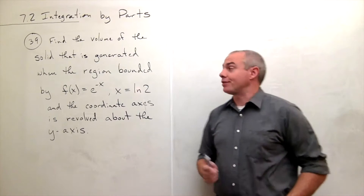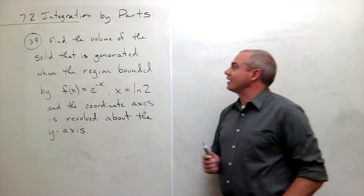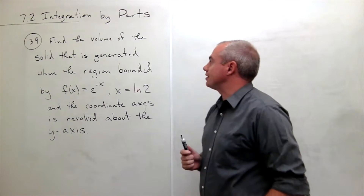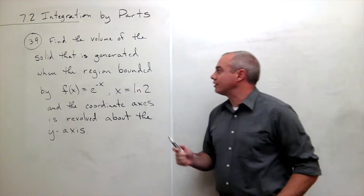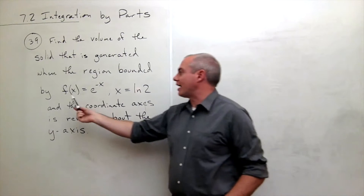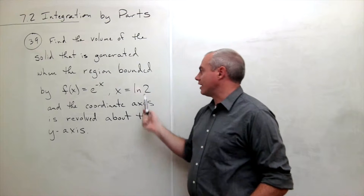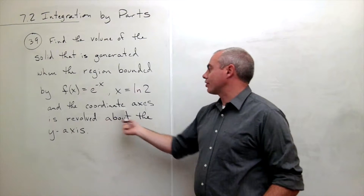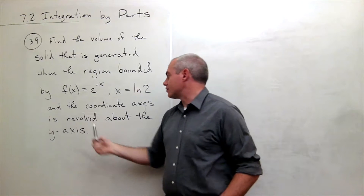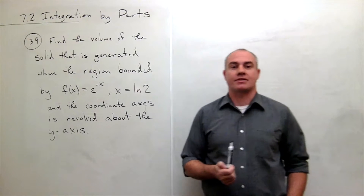I'm the calculus professor and today I'll be talking to you about integration by parts. In problem number 39, we'd like to find the volume of the solid that is generated when the region bounded by f(x) = e^(-x), x = ln(2), and the coordinate axes is revolved about the y-axis.